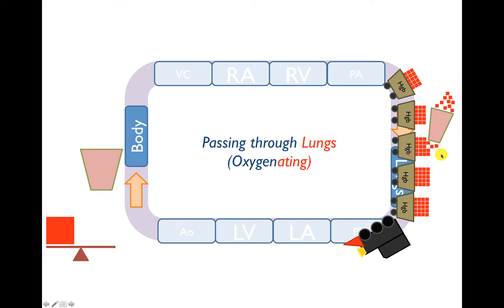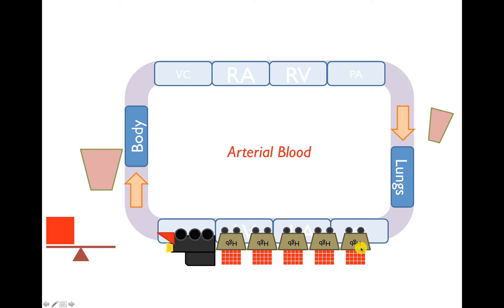When the train comes around to the lungs, the hopper fills the cars with boxes. It takes the blood that was previously 75% saturated, tops it off, and now it's 100% saturated — depicted by the stack of boxes being four high as opposed to three high. So now the blood is fully oxygenated; each hemoglobin is 100% saturated. The train is now in the arterial circulation, 100% saturated, with boxes four high.